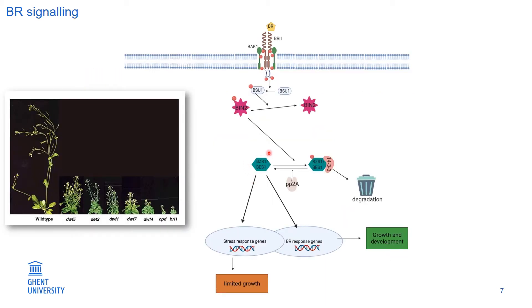Once BZR1 and BES1 are active, they can regulate the downstream genes that are involved in various aspects of plant growth and development. So this pathway or this BR signaling is so much important for plant's growth.